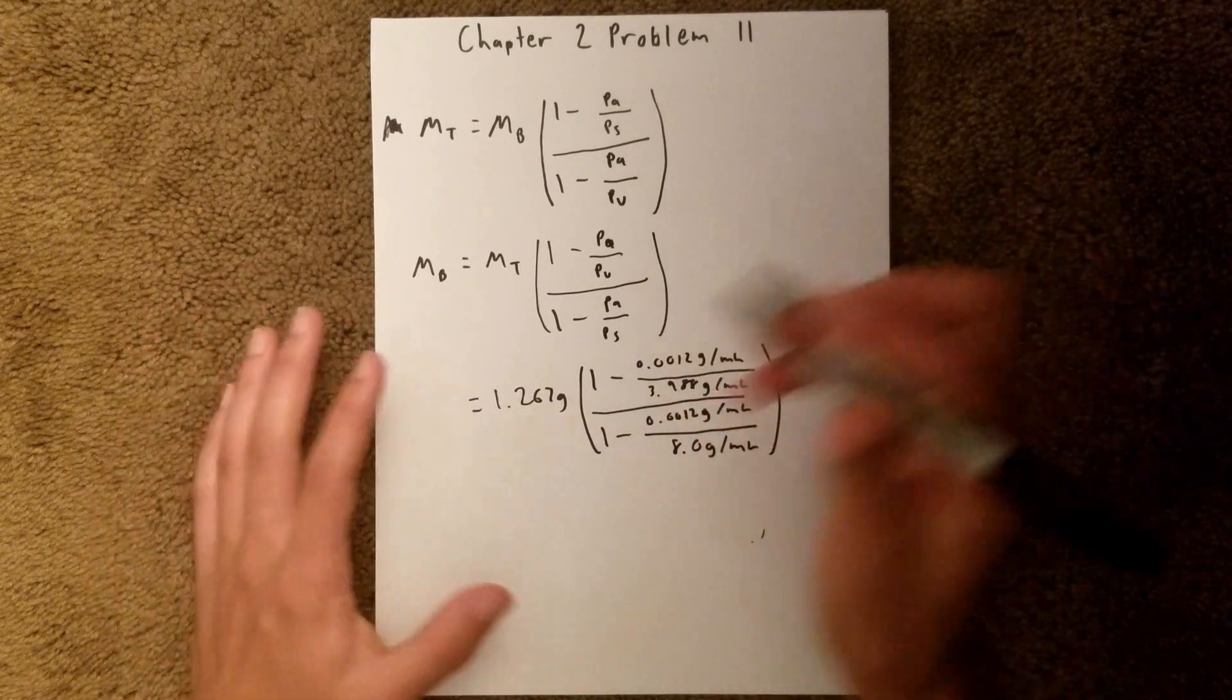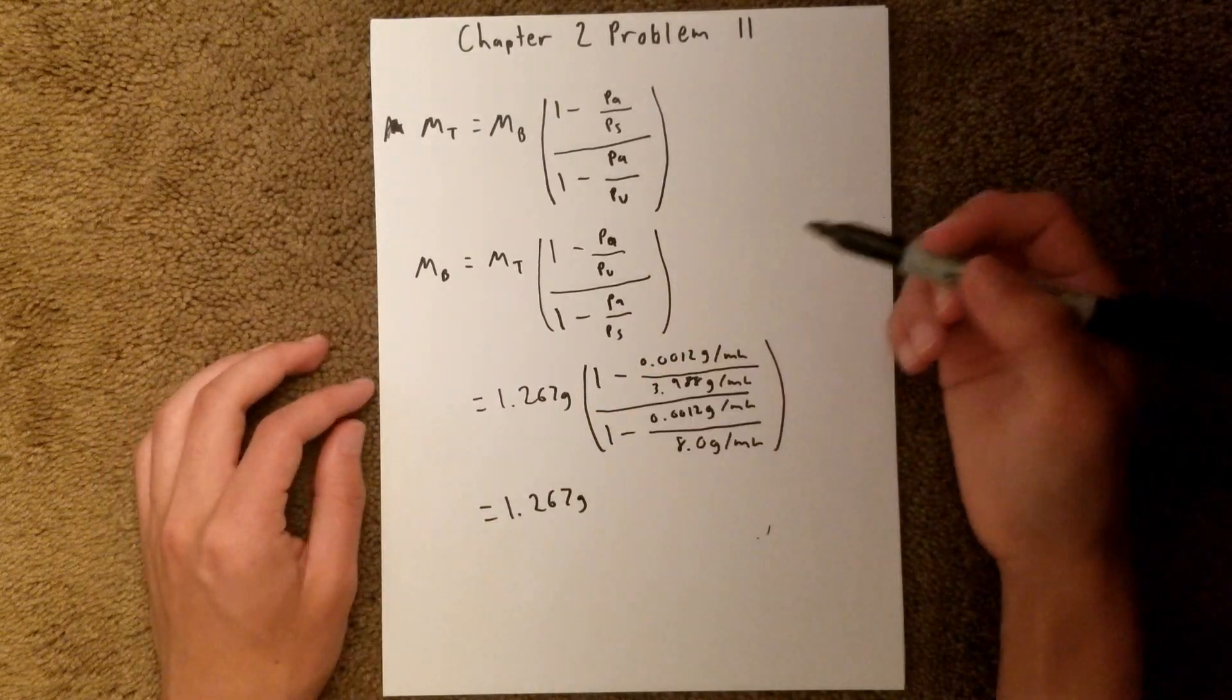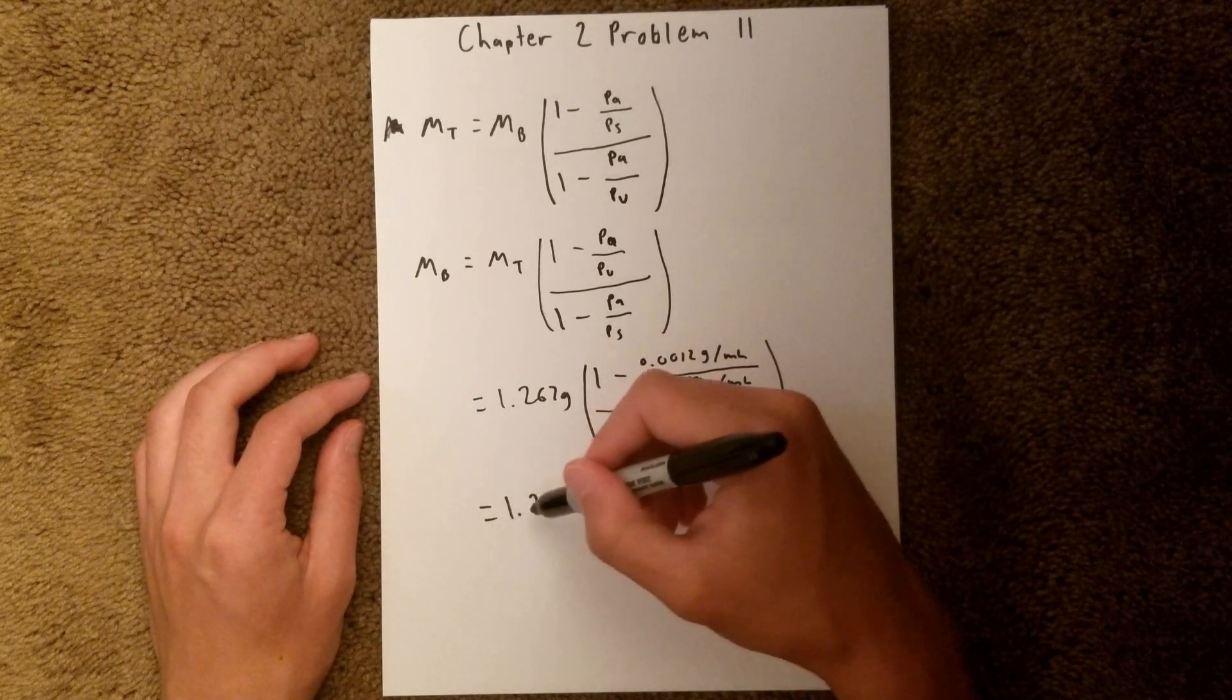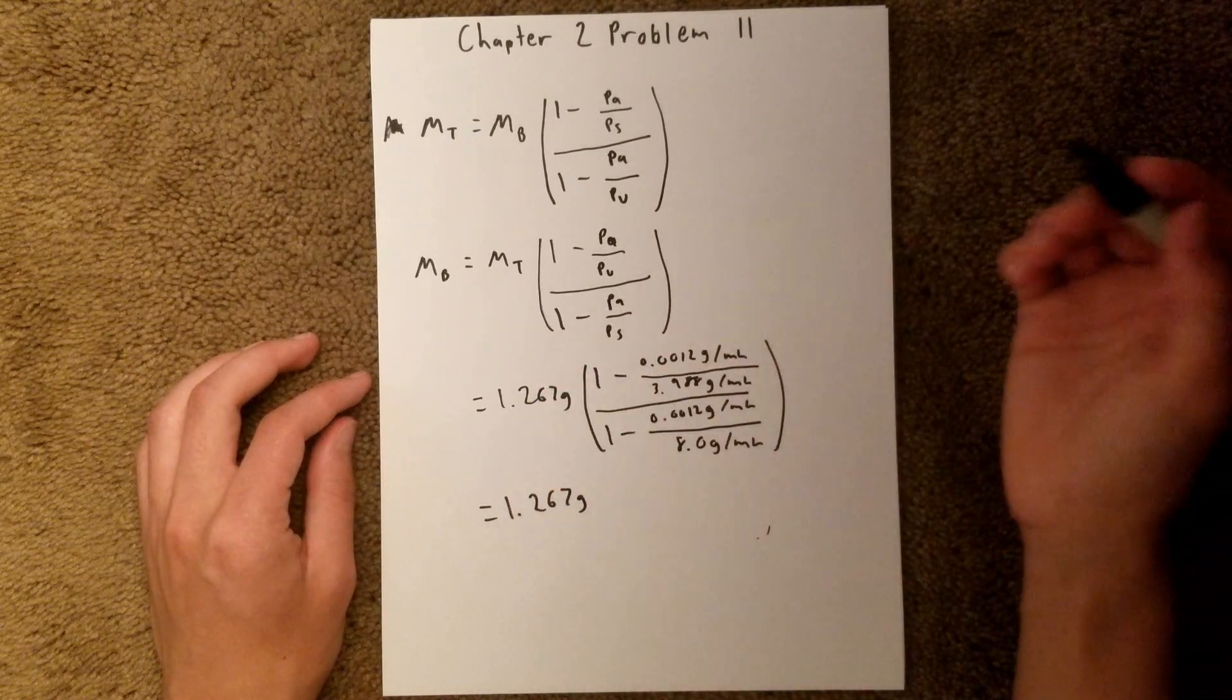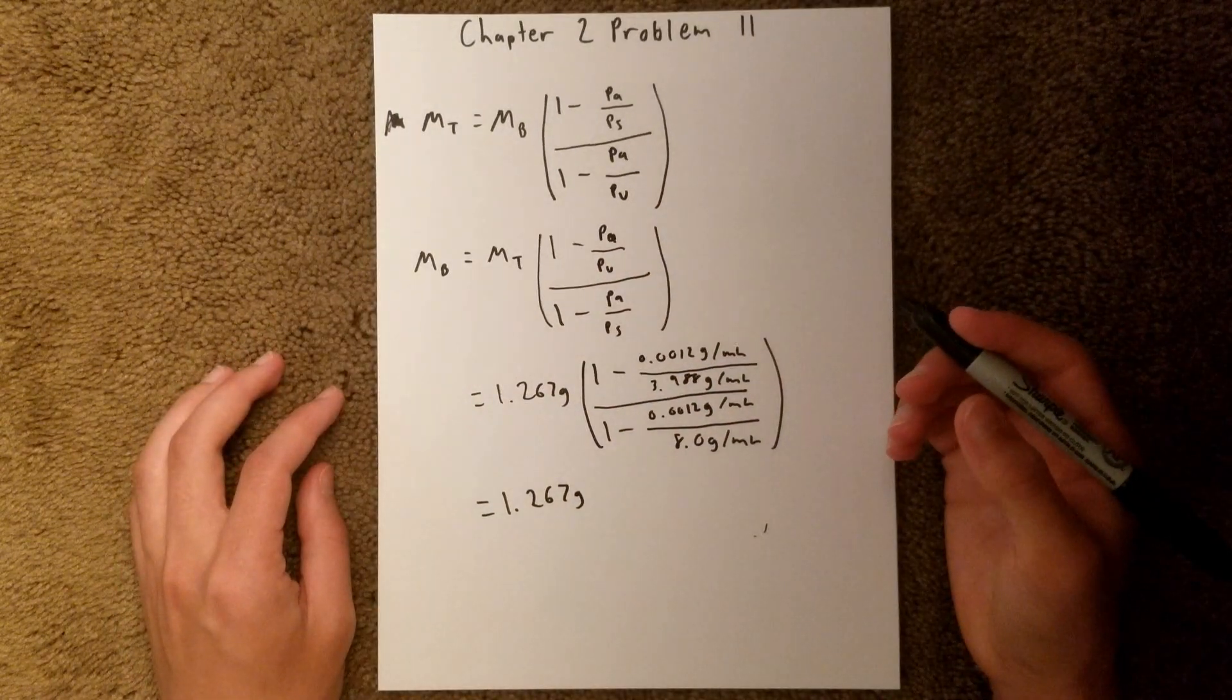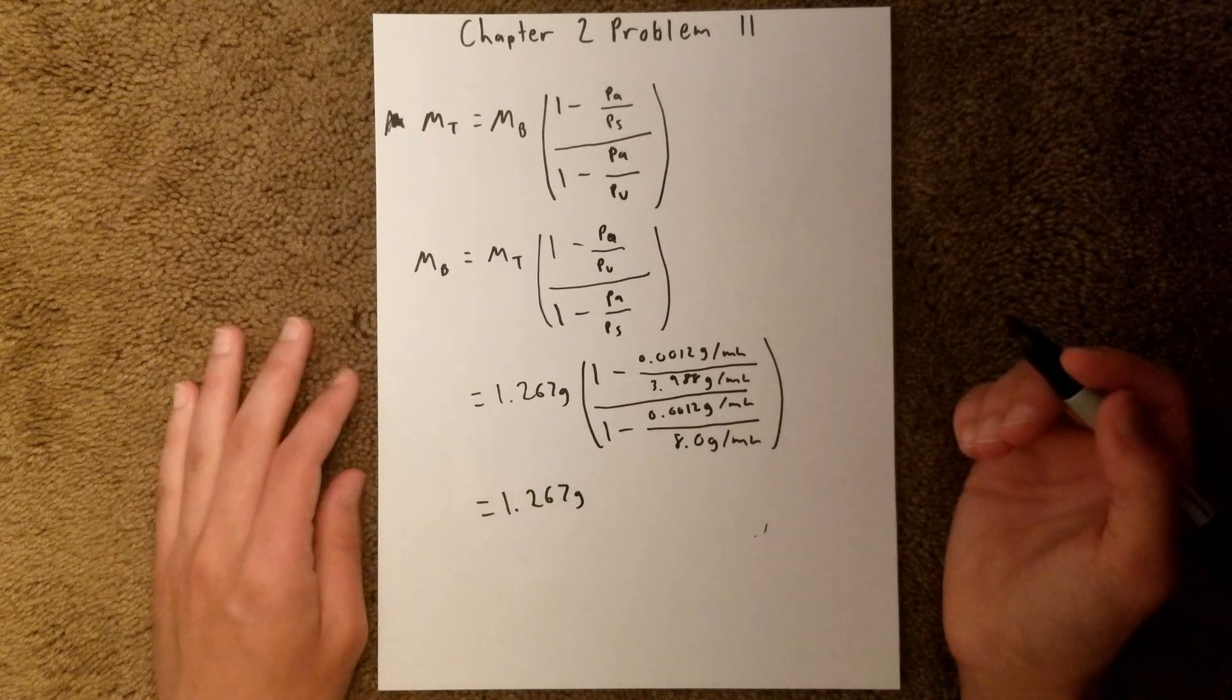And when you plug all of that into your calculator, you will get 1.267 grams, keeping the same amount of sig figs as we're given in the problem with this mass. These two masses will be the same. This one really comes out to like 1.2668 or something like that, but rounding to the amount of sig figs that the original mass we're given in the problem is, they will be the same value. This suggests that buoyancy in this situation is basically negligible. It won't affect any further calculation significantly.